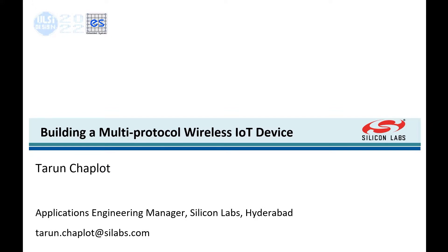Many IoT devices don't have a user interface or keypad. A Thread device, which is a mesh network, may need Wi-Fi to connect to the external world from one of its nodes called a border router. Emerging IoT standards such as Matter from the Connectivity Standards Alliance define protocols for building interoperable IoT systems that use a multitude of connectivity methods. This tutorial describes how wireless coexistence is built into silicon and how performance, power consumption, and interoperability are addressed.